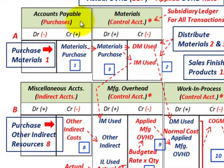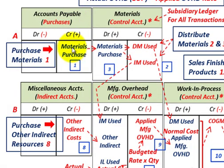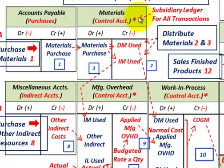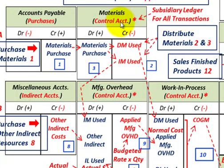Let's go through our steps. Step one is where we purchase some materials under accounts payable — we credit accounts payable for the materials purchased. Those purchased materials are then debited into a materials control account. All these accounts labeled as control accounts are supported by subsidiary ledgers for all the transactions.